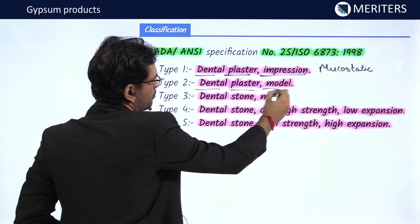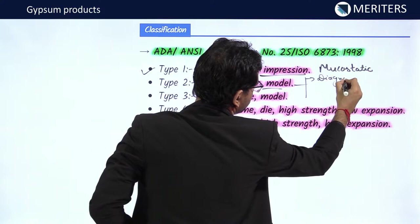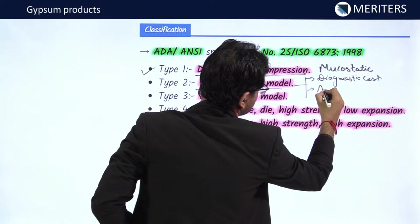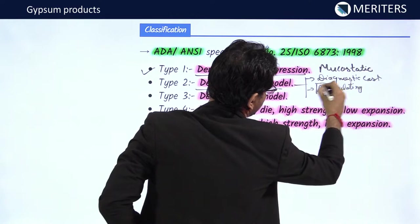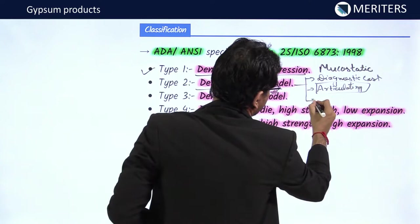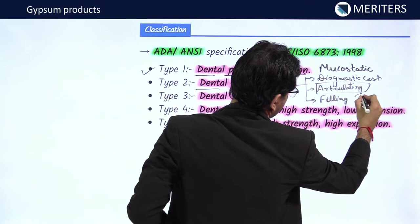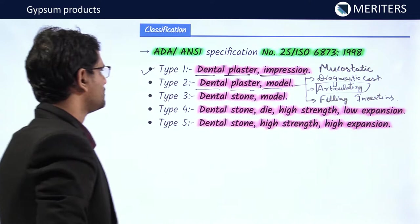Type 2 is dental plaster model, generally used for making diagnostic casts. It can also be used as an articulating material for attaching casts to articulators, and as a filling material in investing procedures.